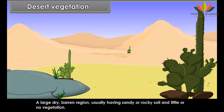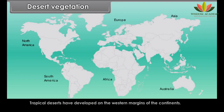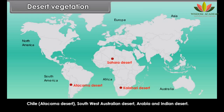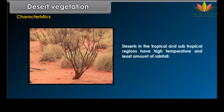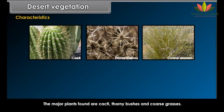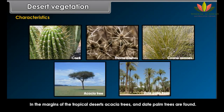Desert Vegetation: A large, dry, barren region usually having sandy or rocky soil and little or no vegetation. Tropical deserts have developed on the western margins of the continents, found in North Africa (Sahara Desert), South Africa (Kalahari Desert), Chile (Atacama Desert), Southwest Australia, Arabia and the Indian Desert. Characteristics: High temperature and least rainfall. Short shrubs occur in patches. Small trees are characterized by thorns, thick stems, long roots and wax-coated leaves and stems. The major plants are cacti, thorny bushes and coarse grasses. Acacia trees and date palm trees are found on the margins of tropical deserts.